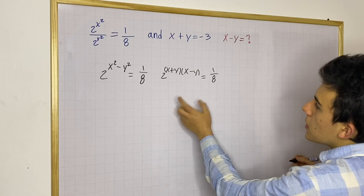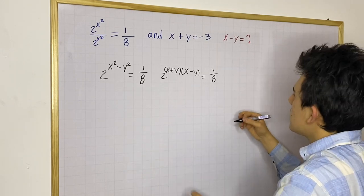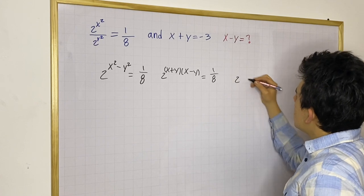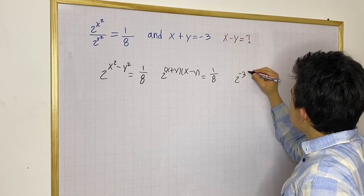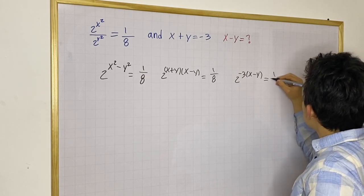Now, what can we do here? Well, we know x plus y is going to be negative 3. So we can rewrite this entire thing as 2 to the minus 3 times x minus y. This is the same as 1 over 8.